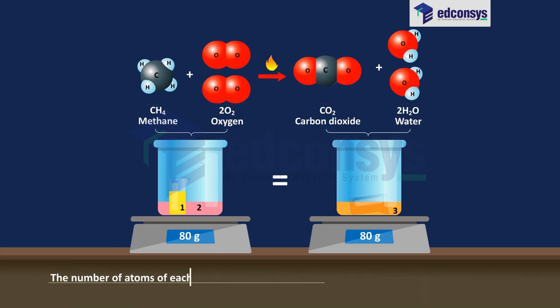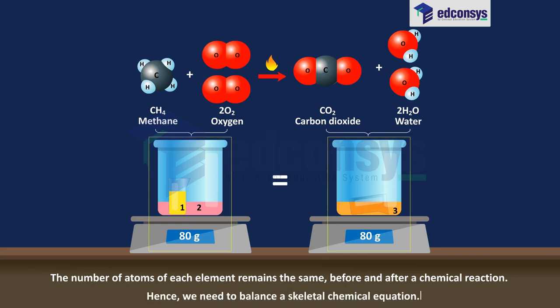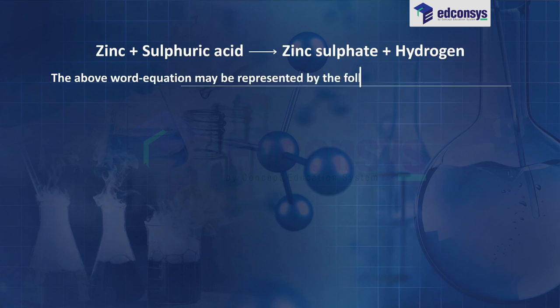The number of atoms of each element remains the same before and after a chemical reaction. Hence we need to balance a skeletal chemical equation. For example: zinc plus sulfuric acid gives zinc sulfate plus hydrogen.